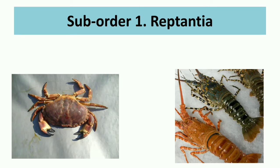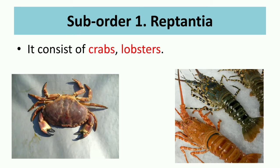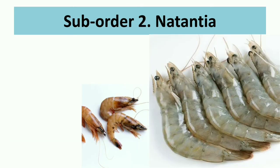The first sub-order, Reptantia, consists of crabs and lobsters. As we can see in the photos, this diagram shows a crab and this one shows a lobster.